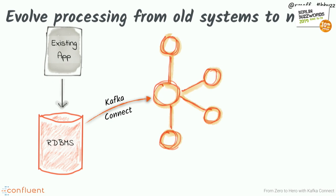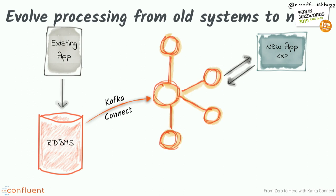You can also use Kafka Connect to start migrating your architectures away from an older way of doing things - maybe built around a monolithic database - and move towards an event-driven approach without tearing everything up and starting over. You can take events out of the database using transaction logs and change data capture, stream them into Kafka, and use them to drive new applications. It's very low impact, very low latency, and you can now drive new services with those events.